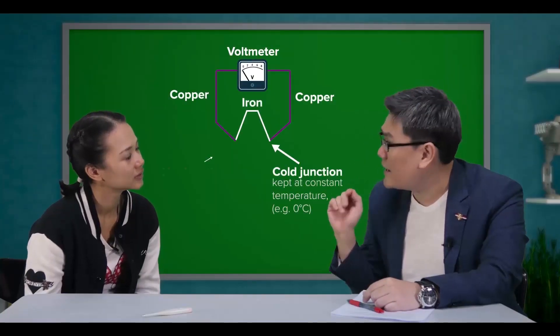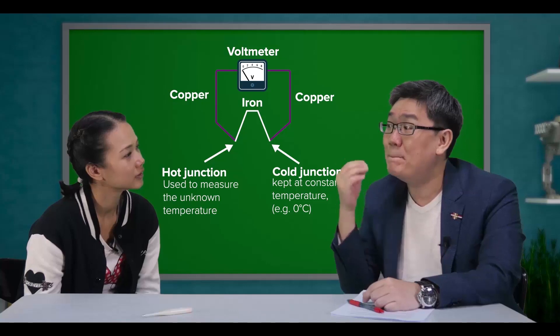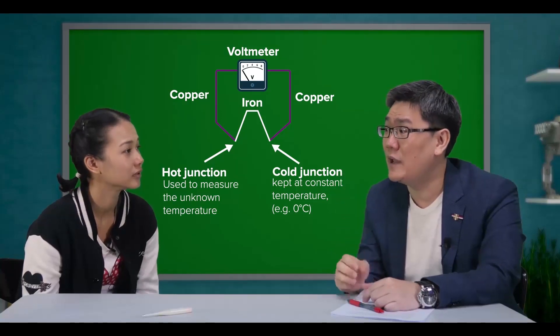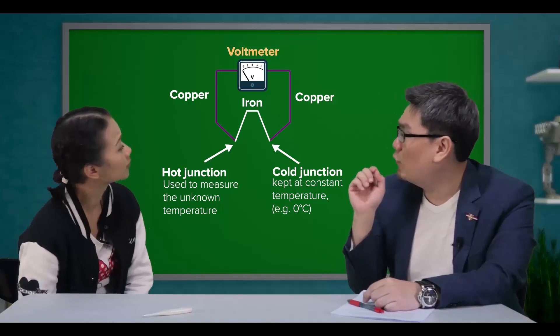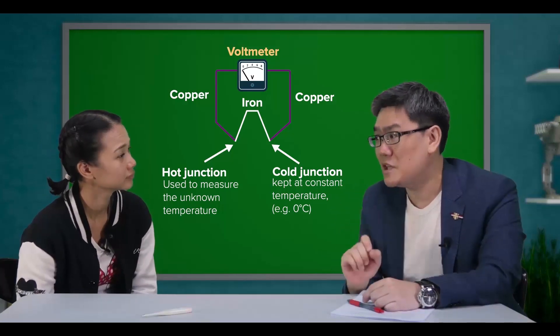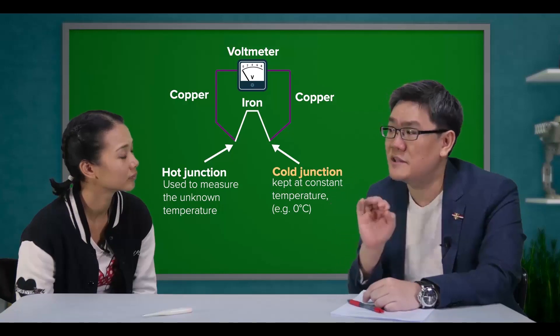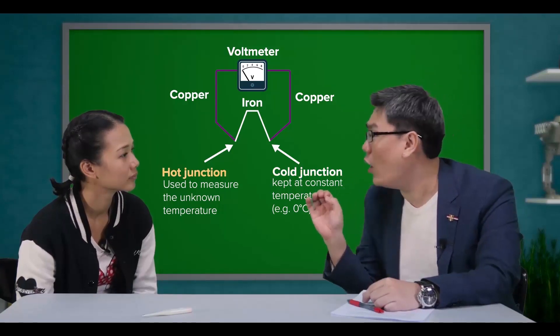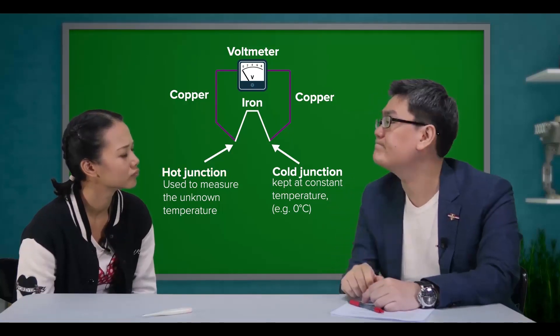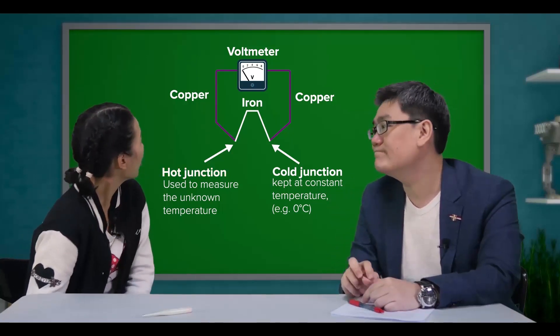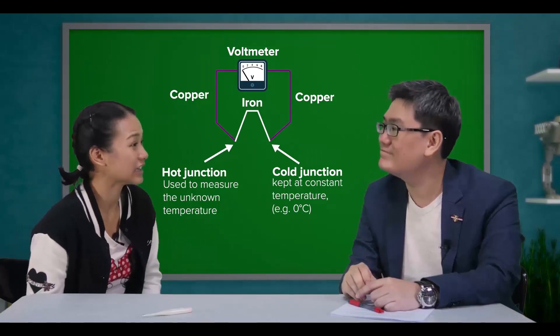I'm still not clear about this. Let's have a look at this diagram so that you can have a better understanding of how a thermocouple works. The voltmeter measures the voltage, the cold junction is kept at zero degrees Celsius, and the hot junction is used to measure the unknown temperature. Oh, I see. I understand it now.